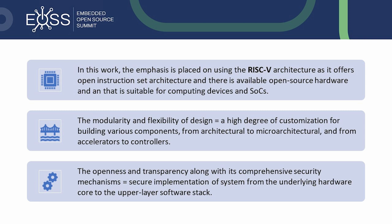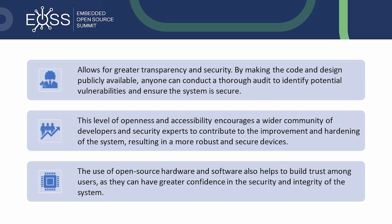The openness and transparency of RISC-V, along with its comprehensive security mechanisms, ensure secure implementation of systems from the underlying hardware core to the upper layer software stack. The open nature of RISC-V allows for greater transparency and security by making the code and design publicly available, so anyone can conduct a thorough audit to identify potential vulnerabilities. This openness encourages a wider community of developers and security experts to contribute to improvement and hardening of the system, resulting in a more robust and secure device. The use of open source hardware and software also helps build trust among users, as they can have greater confidence in the security and integrity of the system.